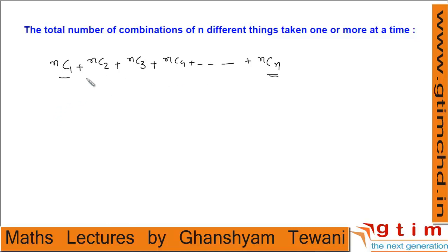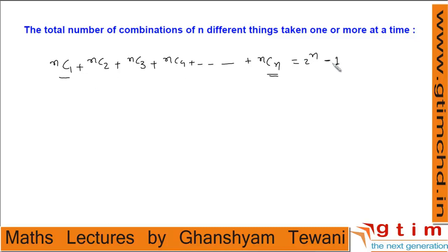Now in binomial expansion, we have seen such a series. The sum of the series nC0 to nCn equals 2 power n. But our series starts with nC1, so we subtract nC0 which is 1. Therefore the total is 2 power n minus 1, which is the number of combinations of n different things taken one or more at a time.